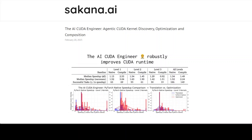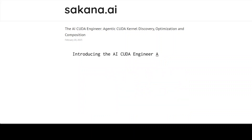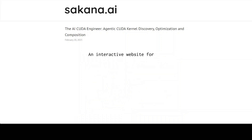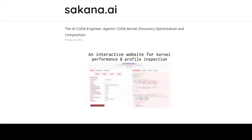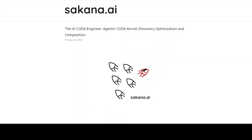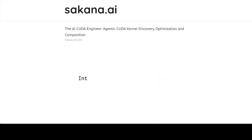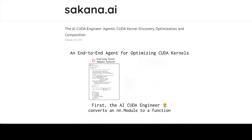Another concept we need to understand is the CUDA kernel. A CUDA kernel is a function written in the CUDA language that runs on a GPU. Kernels are the fundamental building blocks of CUDA programs and they execute in parallel across multiple GPU threads. CUDA kernels are designed to perform specific tasks such as matrix multiplications, data processing, or scientific simulations. By writing instructions directly at the CUDA kernel level, developers can achieve significant performance improvements for compute-intensive tasks.